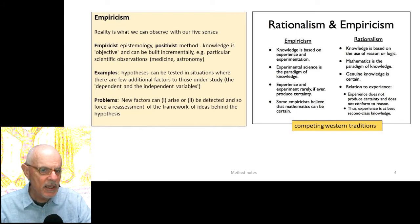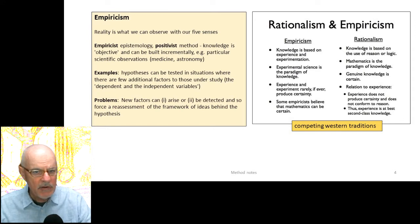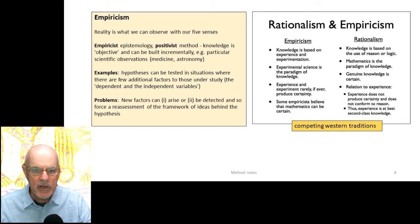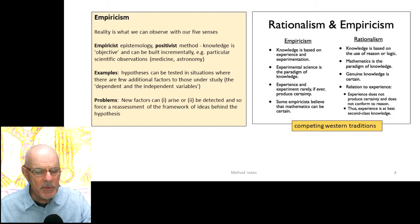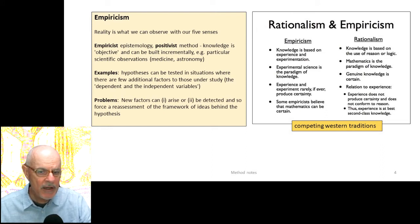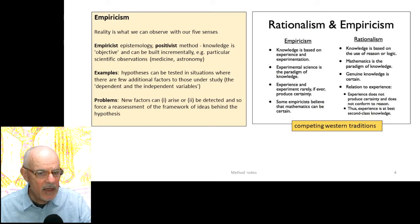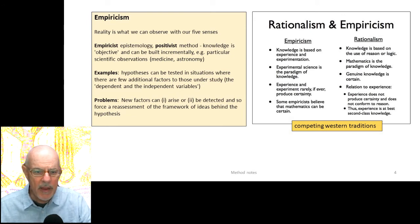Empiricist epistemology with a positivist method means the idea that you can identify positive realities out there independent of our perceptions, and that knowledge is objective and can be built on incrementally — through particular scientific observations in medicine or astronomy where people work together and add to an overall body of knowledge. This applies to areas where hypotheses can be tested in situations where we can isolate the dependent and independent variables. The problem is that new factors can arise and force a reassessment of the framework of ideas.